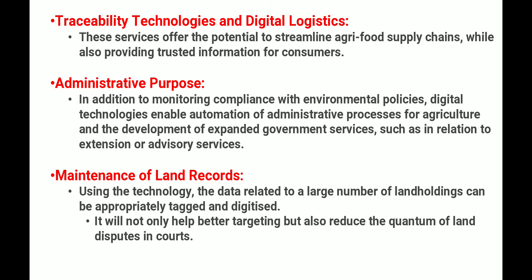Traceability technologies and digital logistics यह services offer करेंगी potential to streamline agri-food supply chain while also providing trusted information for consumer and administrative purposes। In addition to monitoring compliance with environmental policies, digital technologies enable करेंगी automation of administrative processes for agriculture and development of expanded government services such as extension or advisory services, maintenance of land records।